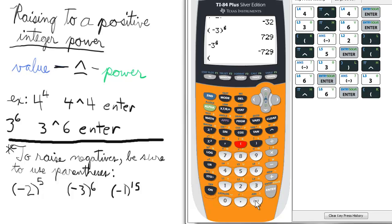So, open parentheses, negative 1, close parentheses, raised to the fifteenth. There we go. Negative 1, baby.